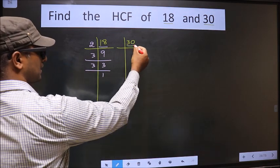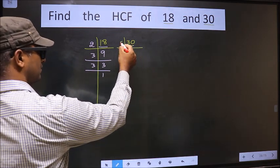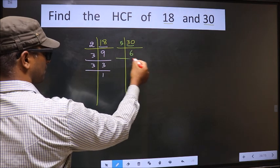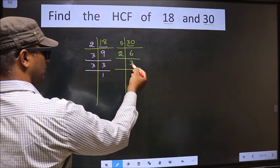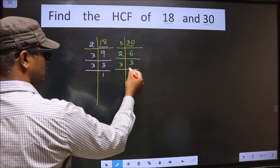Now for the other number 30. 30 is 5×6 is 30. Now 6 is 2×3 is 6. Now we have 3, 3 is a prime number so 3×1 is 3.